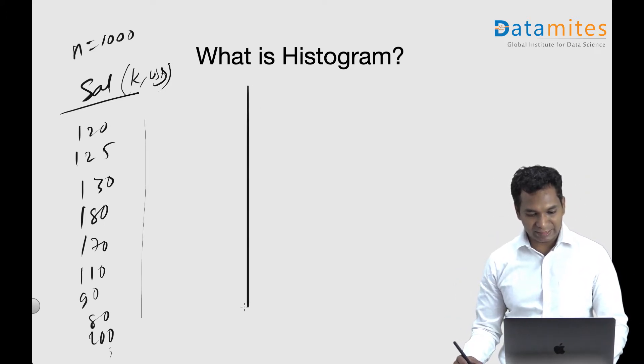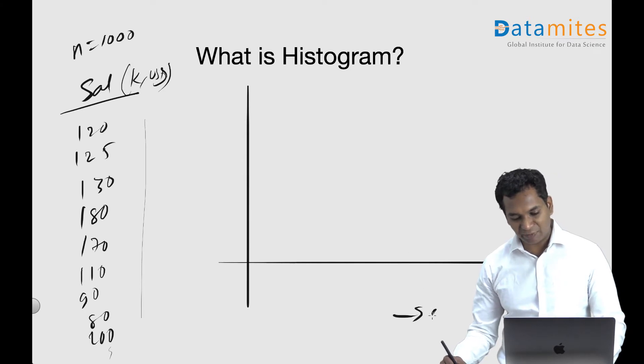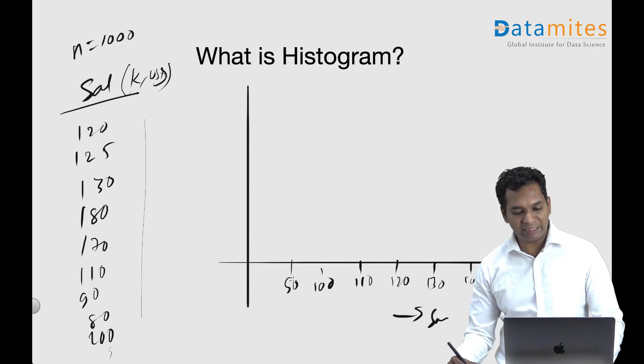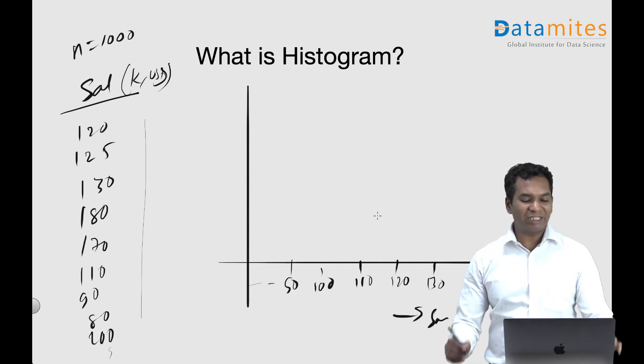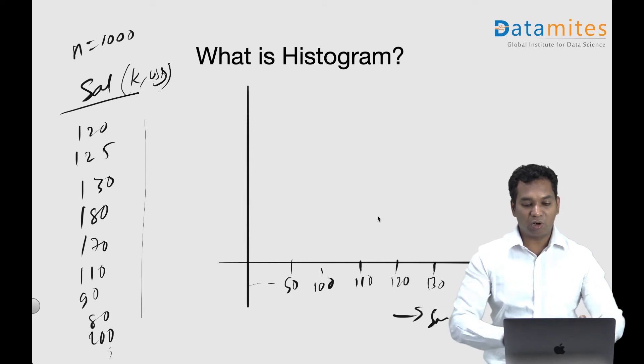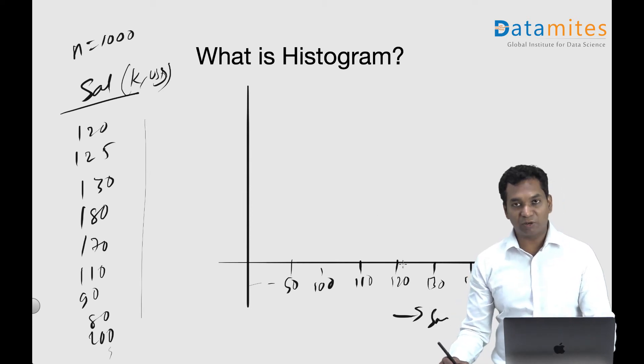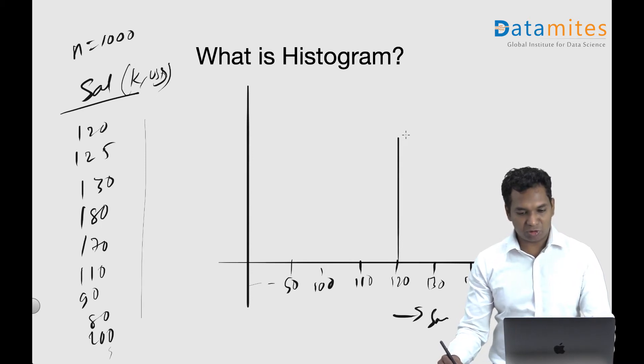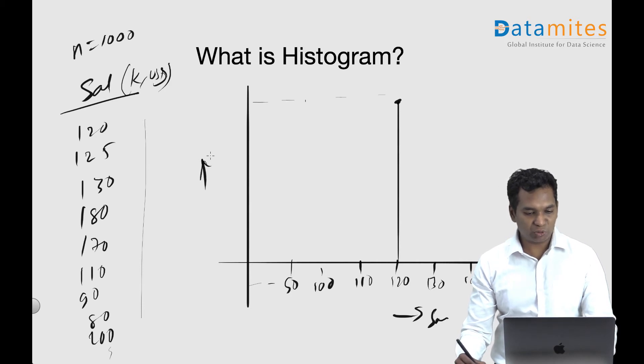Let's say this is your salary. I'm going to roughly say this is around 120, this is 130, 140, and so on, 110, 100, 90, and so forth. And I'm going to literally count the number of people in this 1000 who have a salary around 120. For example, let's say there are about 200 to 250 members, so I'm going to draw a mark at 200. This is your frequency.